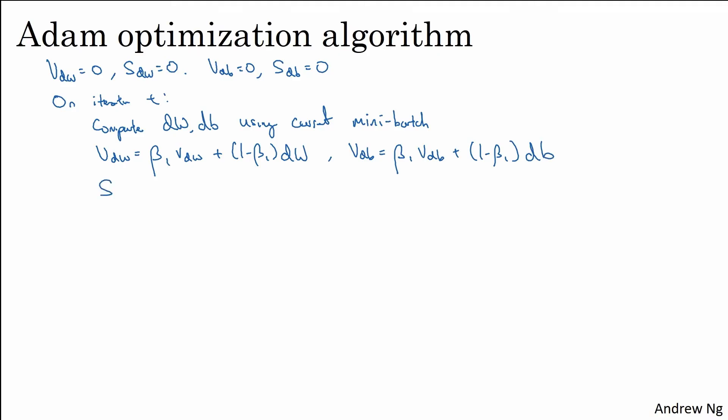And then you do the RMSprop-like update as well. So now you have a different hyperparameter beta 2, plus 1 minus beta 2, DW squared. And again, the squaring there is element-wise squaring of your derivatives DW. And then SDB is equal to this plus 1 minus beta 2 times DB squared. So this is the momentum-like update with hyperparameter beta 1, and this is the RMSprop-like update with hyperparameter beta 2.